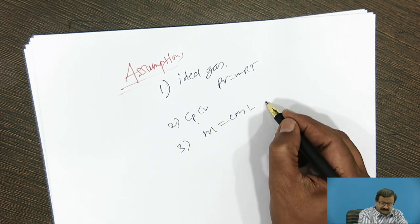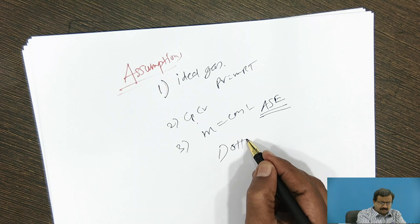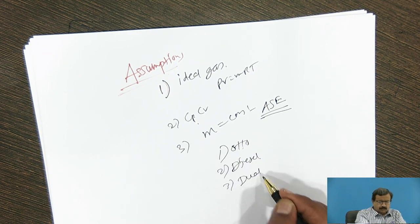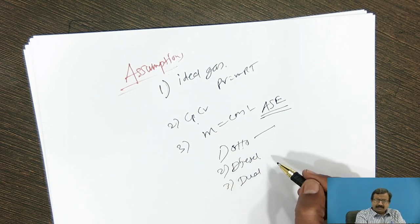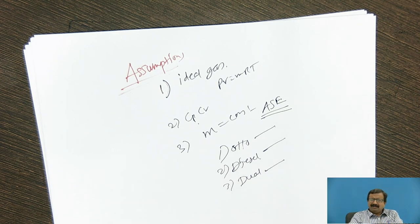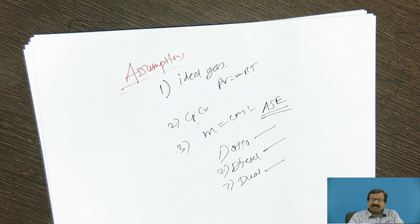There are some standard air standard cycles for which we evaluate efficiencies. The first is the Otto cycle, the second is the diesel cycle, and the third is the dual cycle. The Otto cycle is used for petrol engines, while the diesel and dual cycles are used for diesel engines. In the next session, we will go for Otto cycle analysis — drawing the PV diagram and TS diagram and deriving the expression for efficiency.